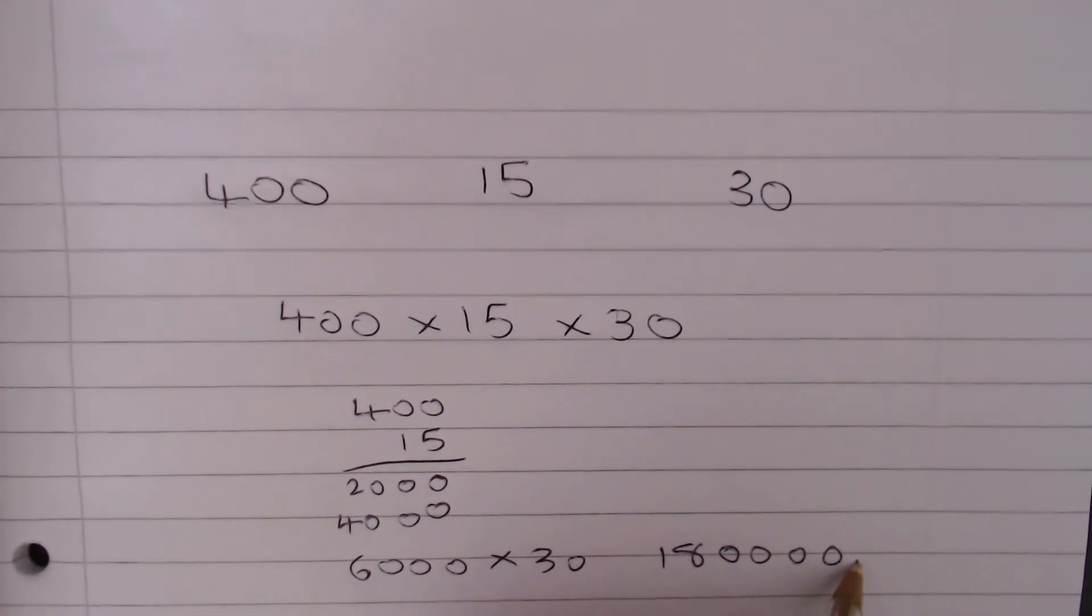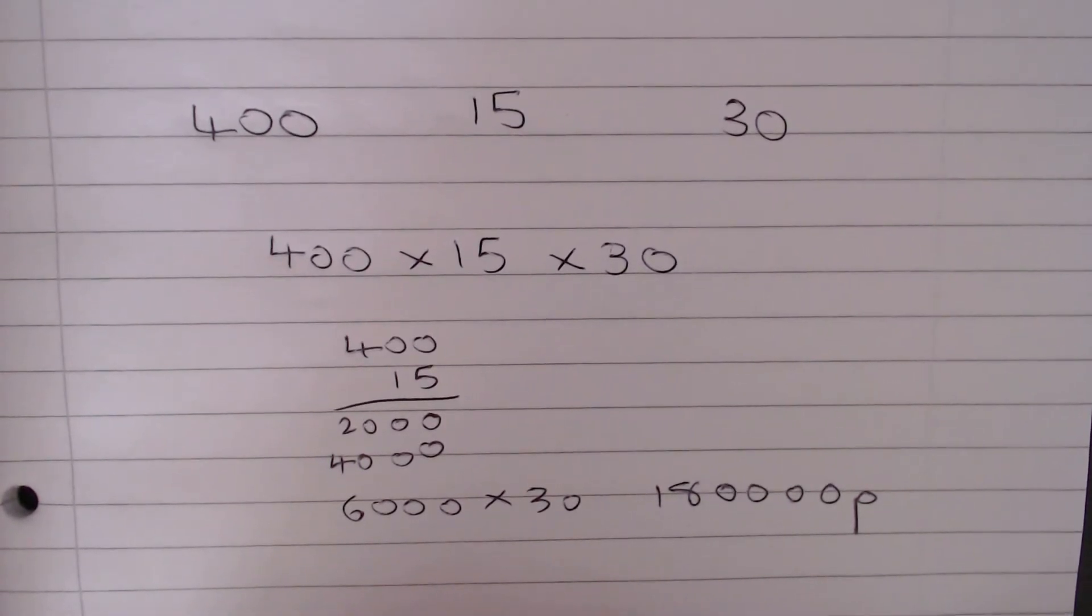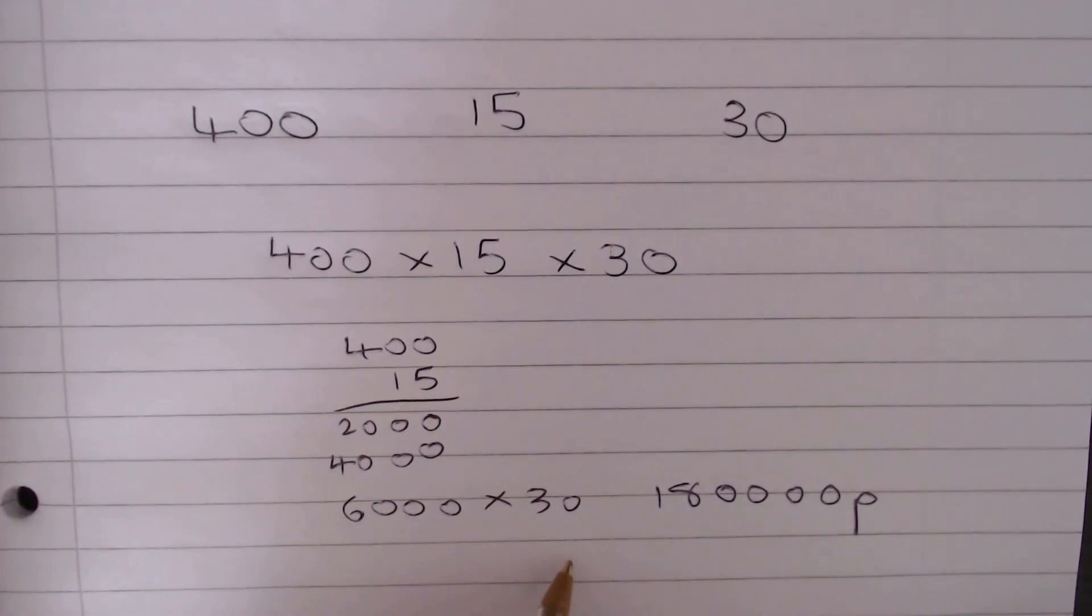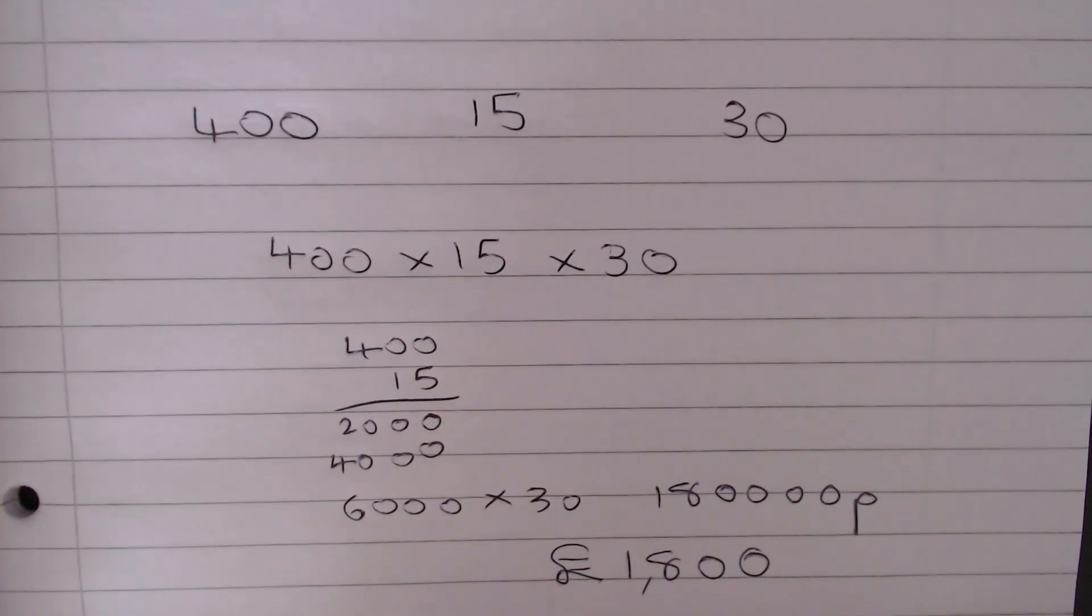Now, we've got to remember this is our answer in pence and the question asked us for an answer in pounds. So, we just need to divide that by 100 to get 18, 0, 0 or 1,800 pounds.